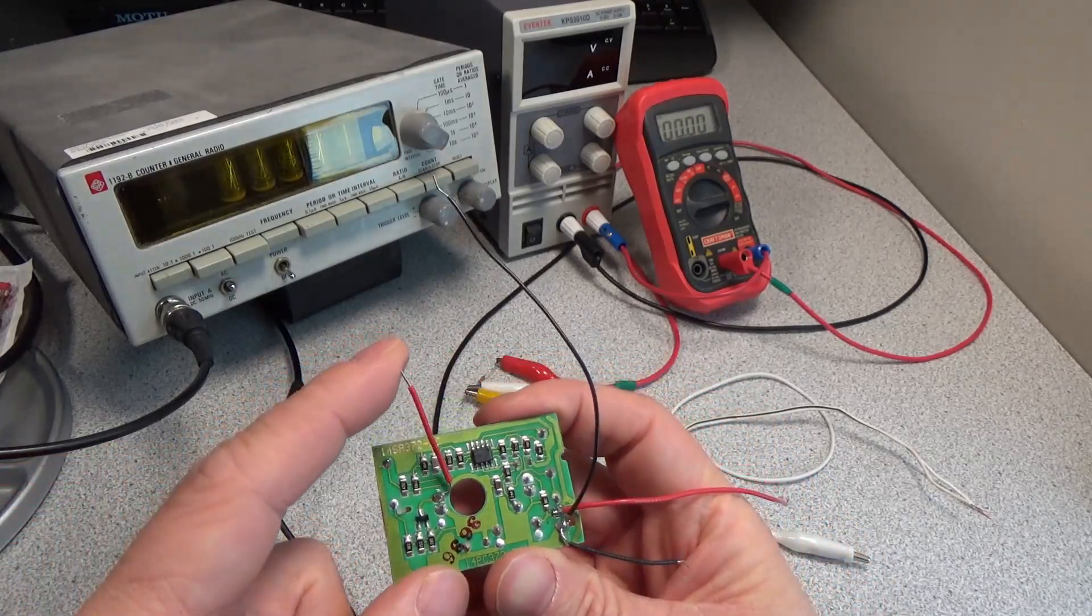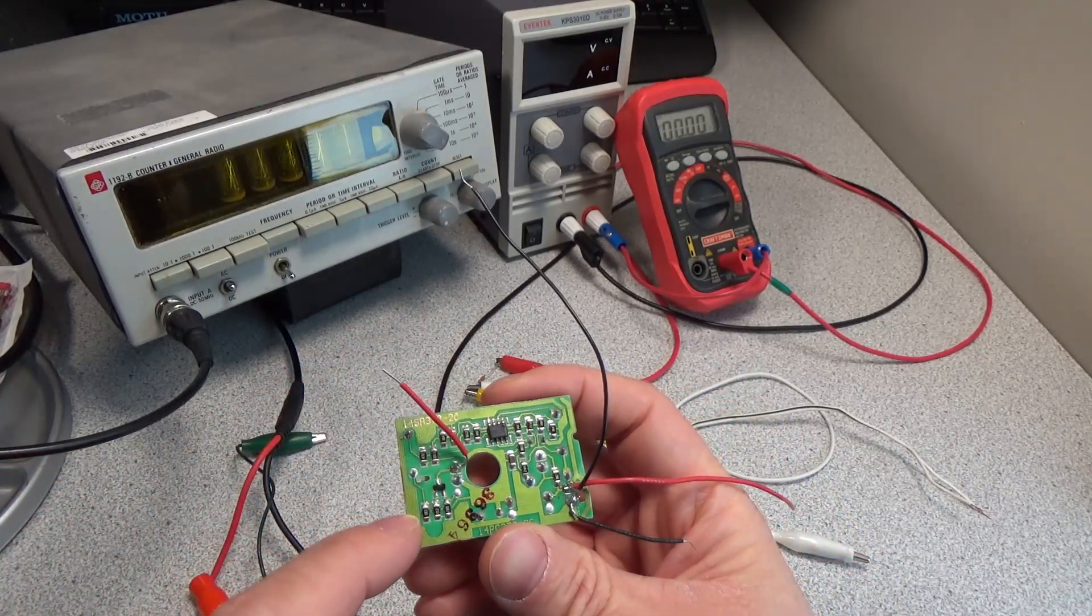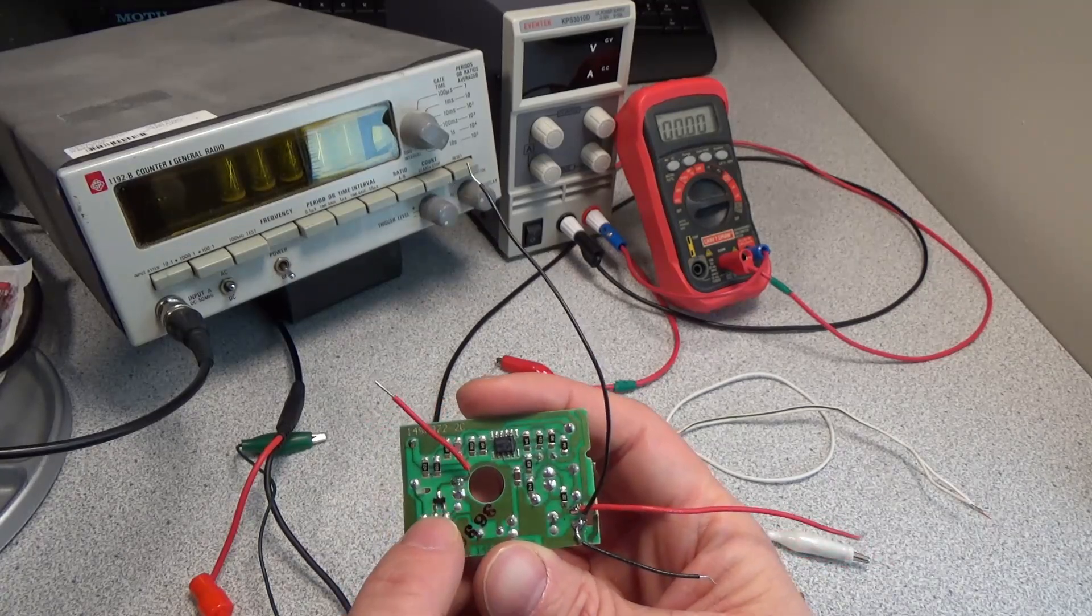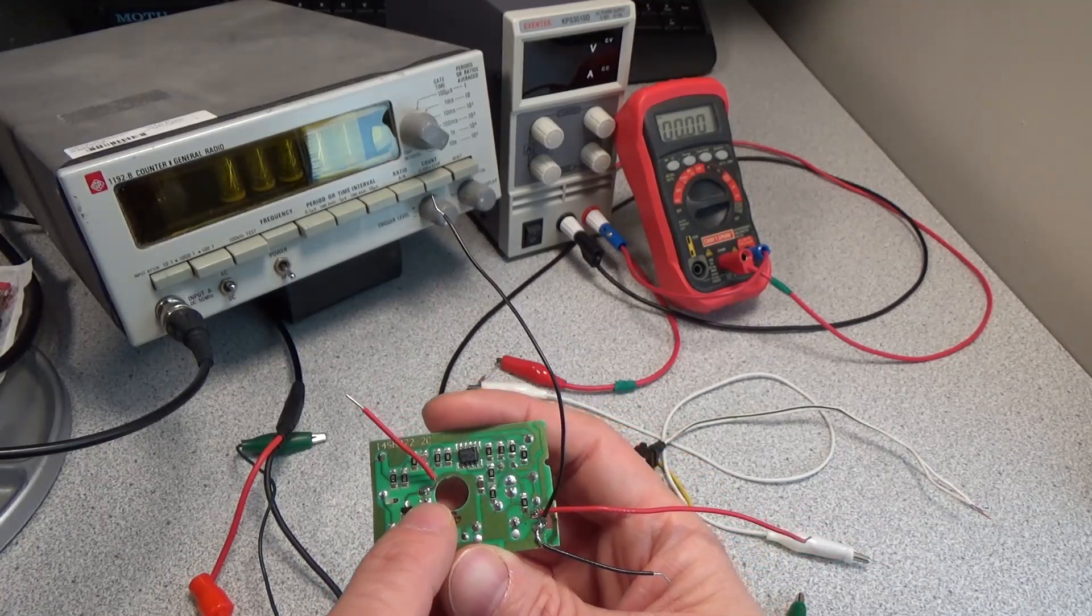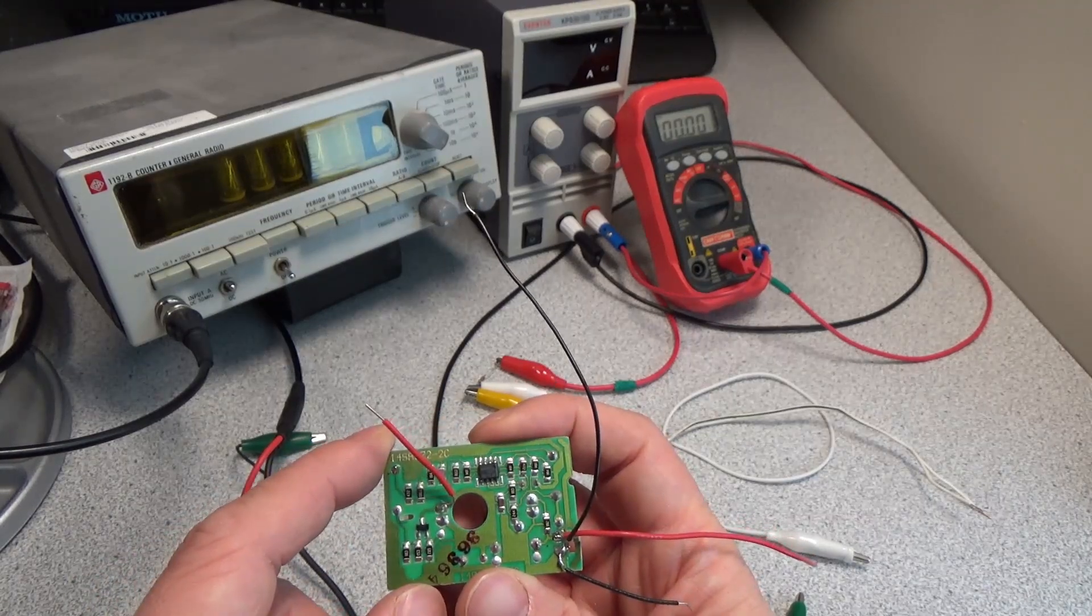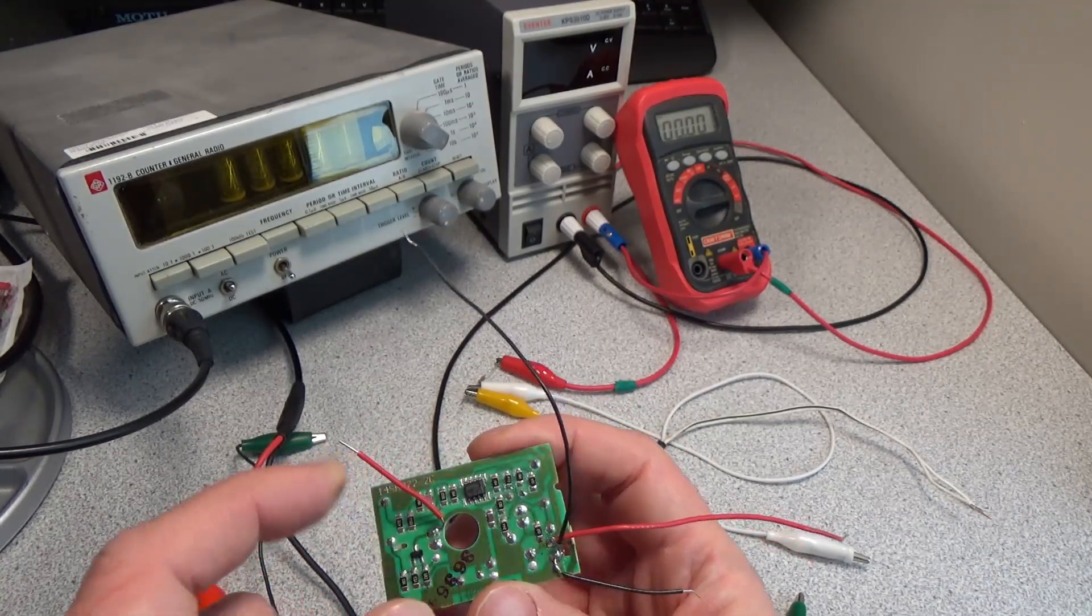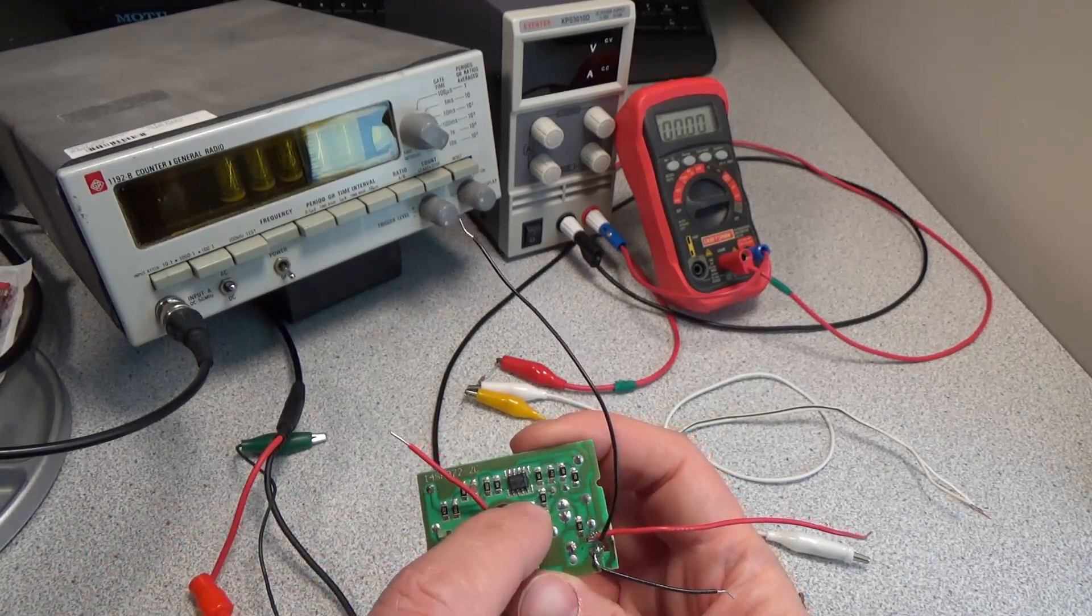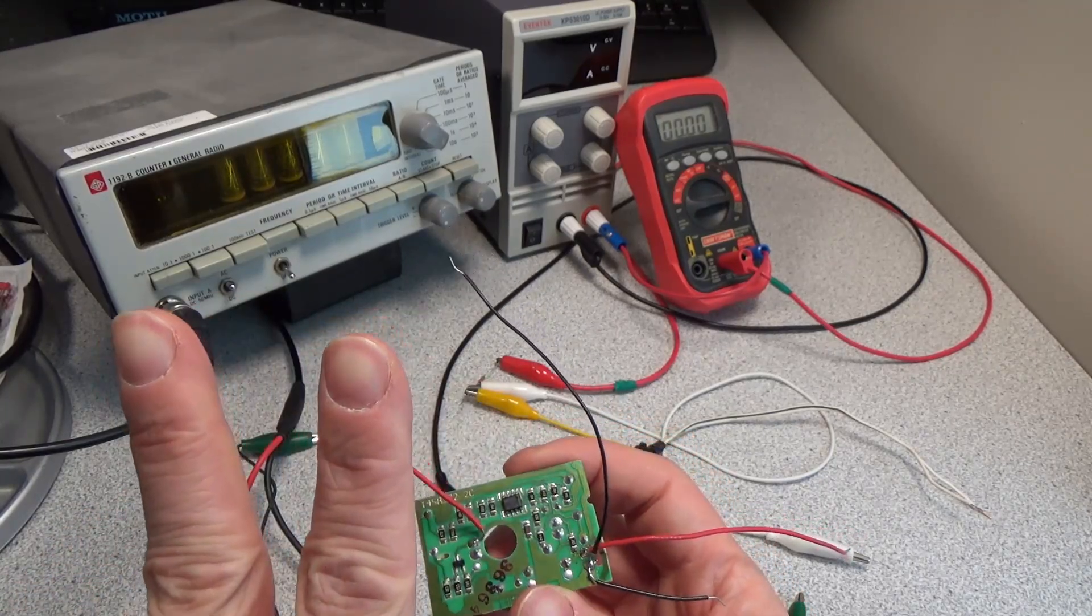On the back, you can see we have a few more components: one transistor, which is the driver transistor for our infrared LED, and a dual comparator. This is an LM2903, a very standard package, and it's being used to make two oscillators.